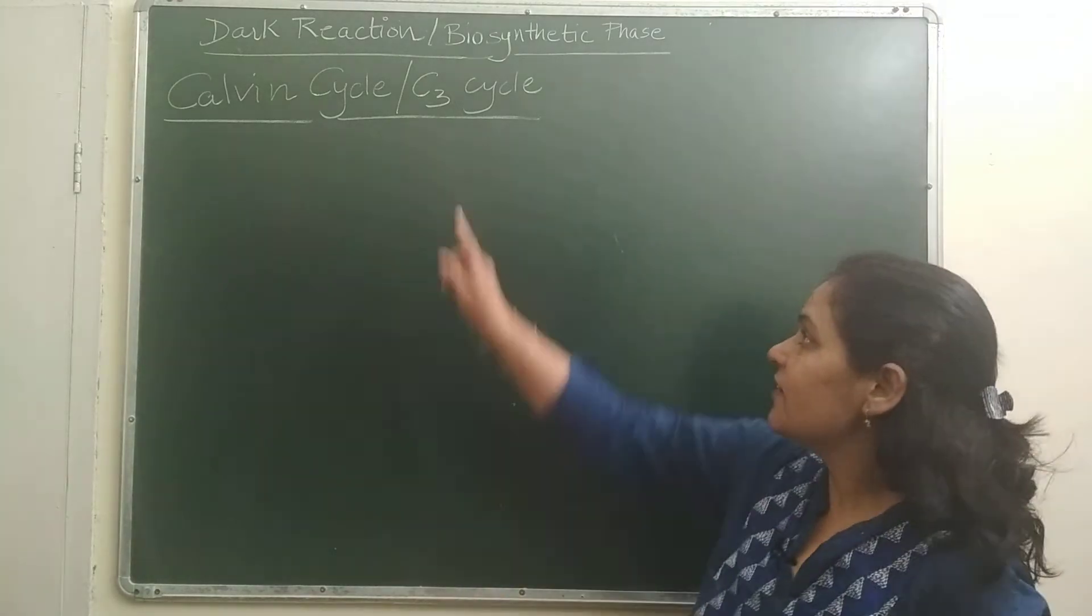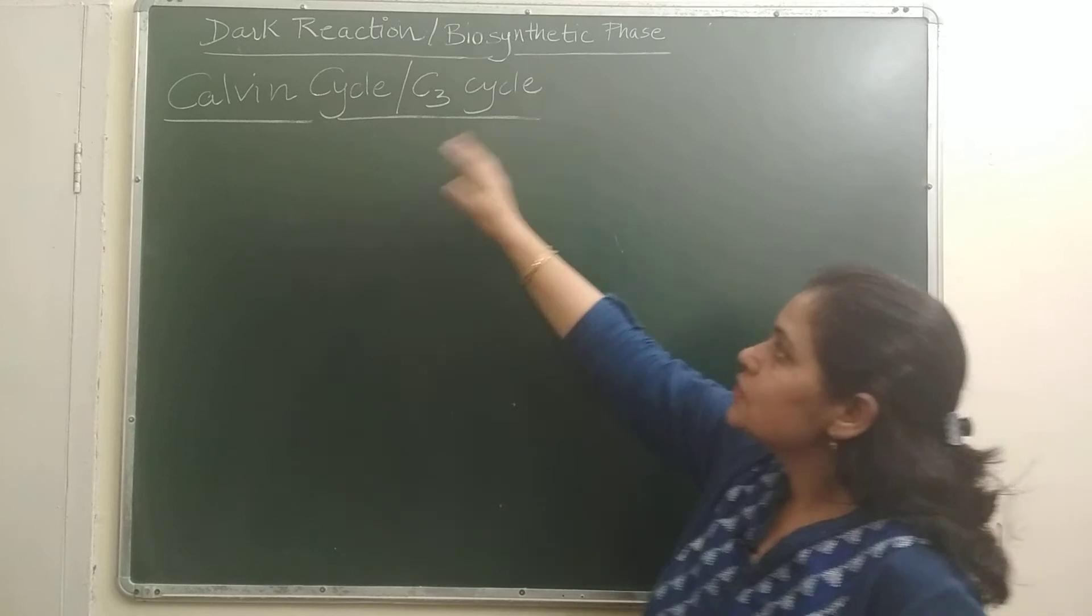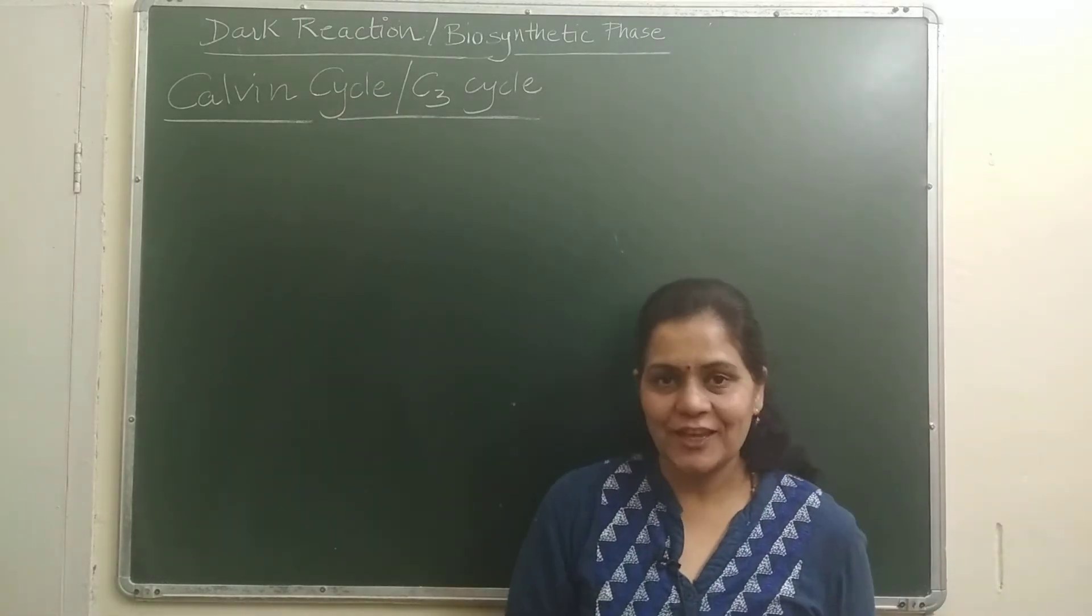The topic we are going to discuss today is Calvin cycle, which is also known as C3 cycle. It occurs during dark reaction. What is in dark reaction? Calvin cycle is happening.